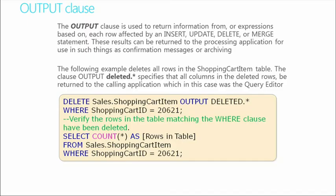The last piece to look at is the OUTPUT clause, which returns information from any expression whenever we're performing an insert, update, or delete. For example: DELETE sales.ShoppingCartItem OUTPUT deleted.* WHERE ShoppingCartID = 20621. The OUTPUT deleted.* specifies that all columns in the deleted rows are returned to the application that called that delete — such as Query Editor — so we can verify that the rows matched by the WHERE clause have been deleted.